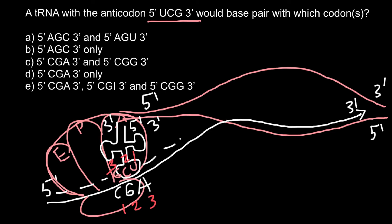We have two answers that look correct: answers C and D. Both of them give us the correct orientation of the messenger RNA, which is 5'-CGA-3'.